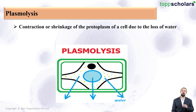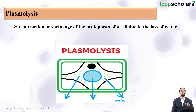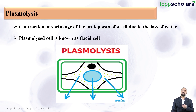Why is a cell losing water? Let's say the cell is kept in a hypertonic solution, meaning the concentration of solutes outside the cell is very high compared to the concentration of solutes inside the cell. Due to this, there is going to be shrinkage of the protoplasm because lots of water is going to move out of the cell. This is called plasmolysis.